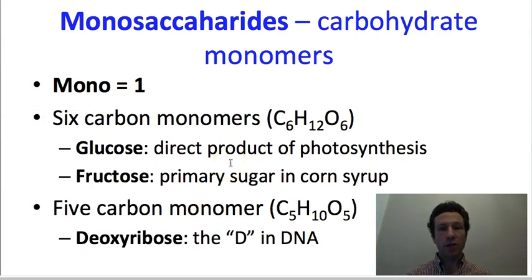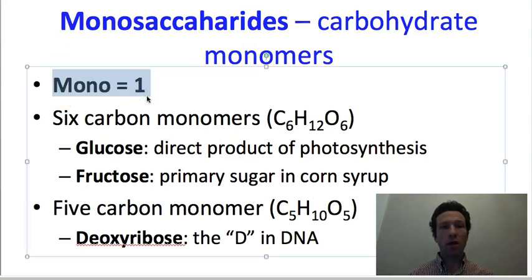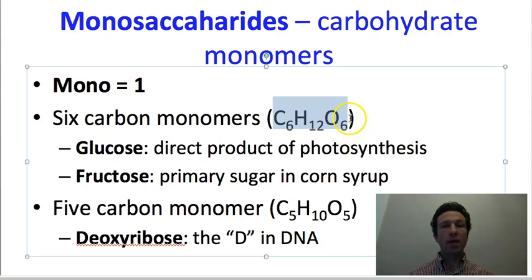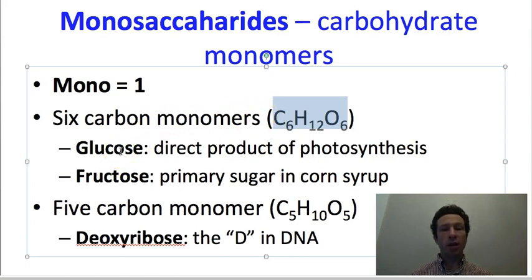The monomer of a carbohydrate is a monosaccharide. Saccharide refers to sugar, and the prefix mono means one. So anytime we have one unit, it's a monosaccharide. There are multiple important sugars with the formula C6H12O6. There are two 6-carbon monomers we will talk about: the first is glucose, and the second is fructose.